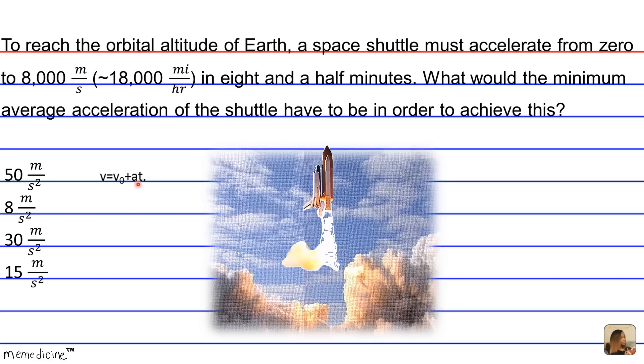So we can solve for A, average acceleration. When we plug in our values, we plug in 8,000, our 0 meters per second for our initial velocity. And what you can go ahead and do ahead of time is convert eight and a half minutes to seconds by multiplying 8.5 times 60, and you'll get 510 seconds. And you're going to multiply that by A, the average acceleration.